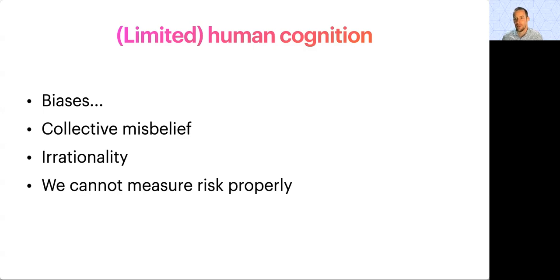About our limited human cognition, we have hundreds of cognitive biases and we make mistakes all the time. We're called victims of collective misbelief. We are irrational and we're unable to measure risk properly. Those are many things that work against us in such situations where we cannot make the right decisions.